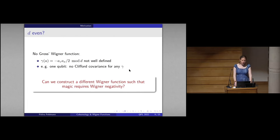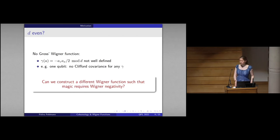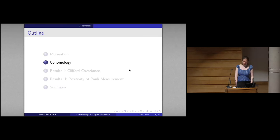The main question is whether we can construct a different kind of Wigner function such that magic still requires Wigner negativity in the even-d case. The answer, conditioned on some assumptions about what a Wigner function is, is no — and we give this answer in terms of cohomology.